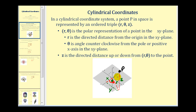If we consider the location of point P in space, R would be the distance from the origin or pole in the XY plane, theta would be the angle of rotation from the positive x-axis or polar axis, and then the Z coordinate would tell us whether to go up or down. Let's take a look at an animation that illustrates this a little bit better.